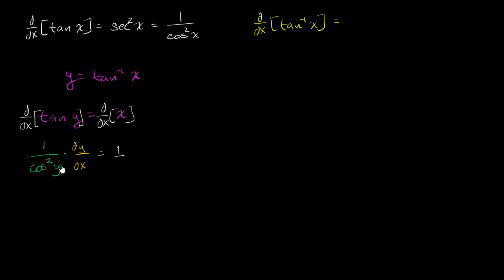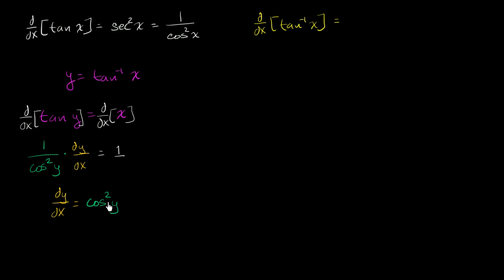So we get, if we want to solve for the derivative of y with respect to x, we just multiply both sides by cosine of y squared. And we get the derivative of y with respect to x is equal to cosine of y squared. But this isn't that satisfying, because we've written the derivative as a function of y, and what we're really interested in is writing it as a function of x. To do that, we need to express this in terms of the tangent of y, since we know tangent of y equals x.